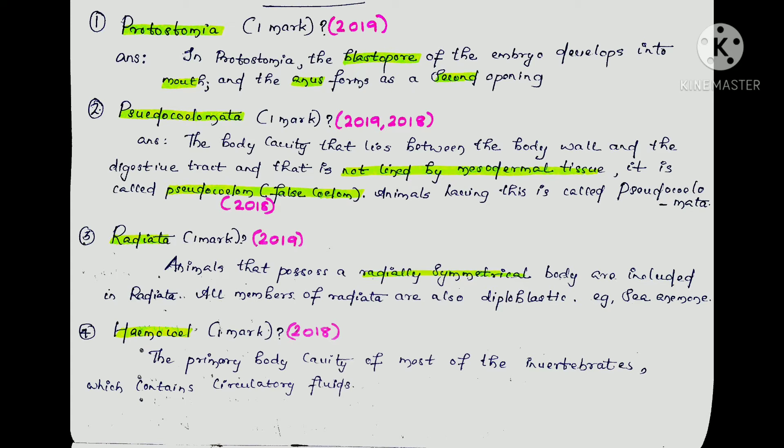The body cavity lined by mesodermal tissue is a true coelom. A false coelom is a pseudocoelom. Animals without any coelom are acoelomates.